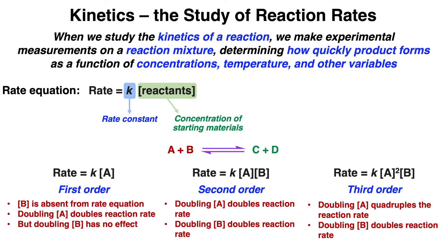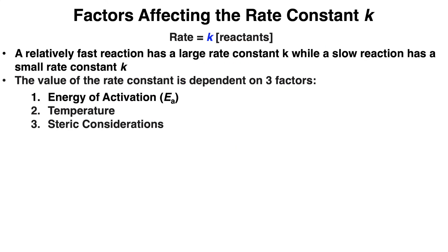The rate of any reaction can be described by a rate equation, where rate equals the rate constant K times the concentration of reactants. If the concentration of a reactant increases, the frequency of collisions also increases. There are three types of rate equations: first order, second order, or third order. A reaction is first order when the concentration of reactant B is completely absent from the rate equation, so doubling the concentration of A speeds up the rate twice. A reaction is second order when both A and B are present in the rate equation. A reaction is third order if doubling the concentration of A quadruples the reaction rate.